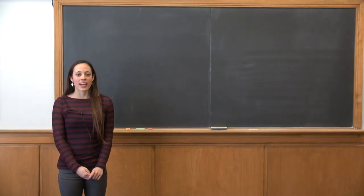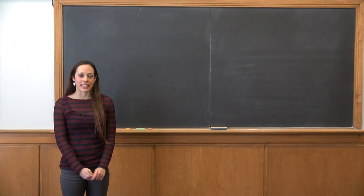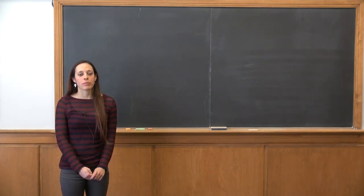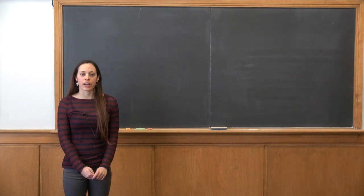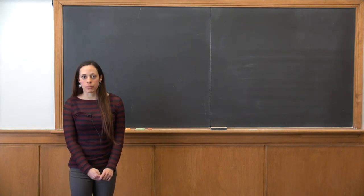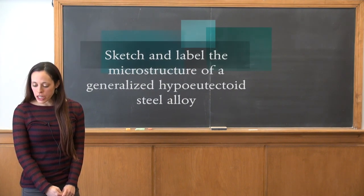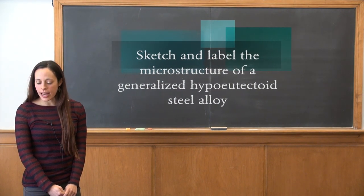Hello, my name is Megan and I am a PhD student in the Department of Materials Science and Engineering. Today I will be solving a question from the summer 2012 final exam for MSC 101. It's question number eight and the question reads: sketch and label the microstructure of a generalized hypoeutectoid steel alloy.